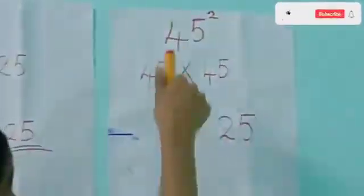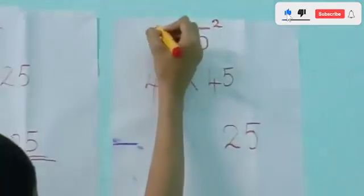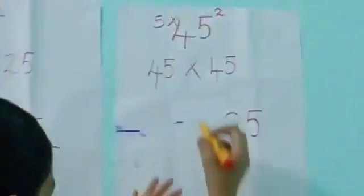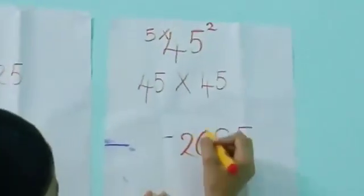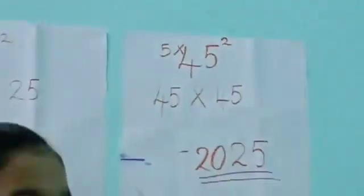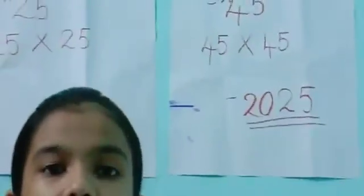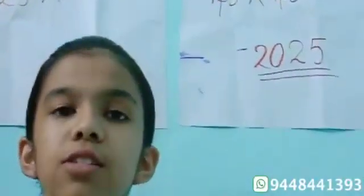Then the number after 4 is 5. So we want to multiply 5 into 4. That is 20. So the final answer is 2025. The square of 45 is 2025.